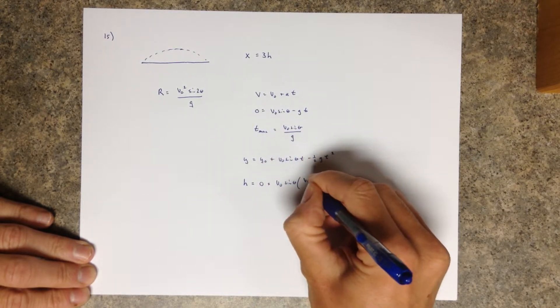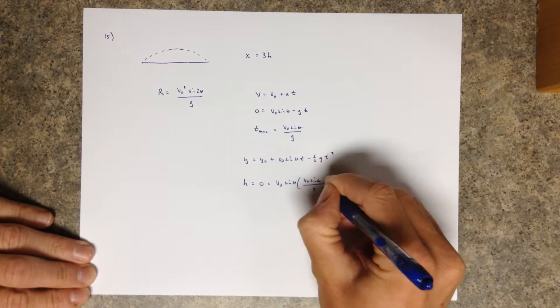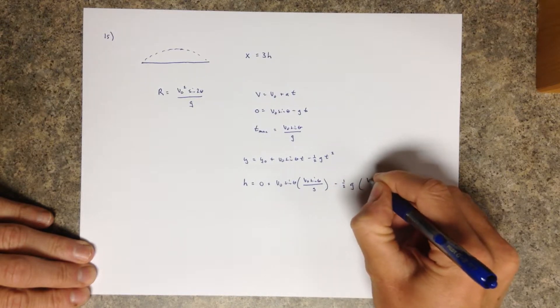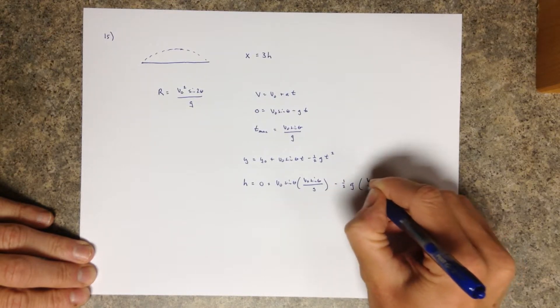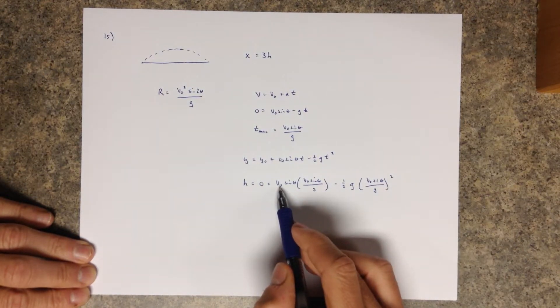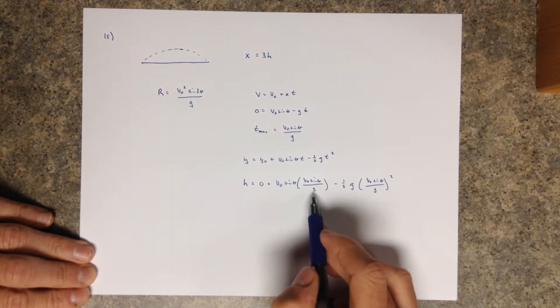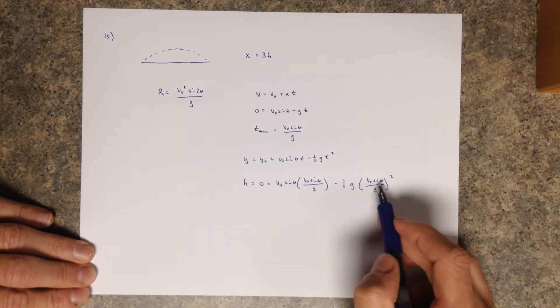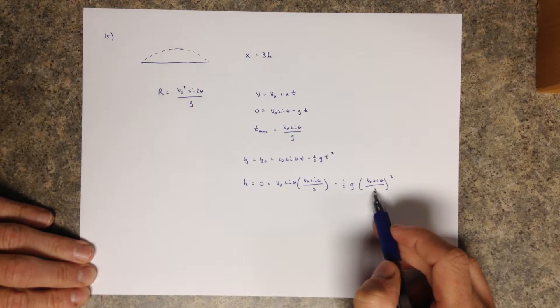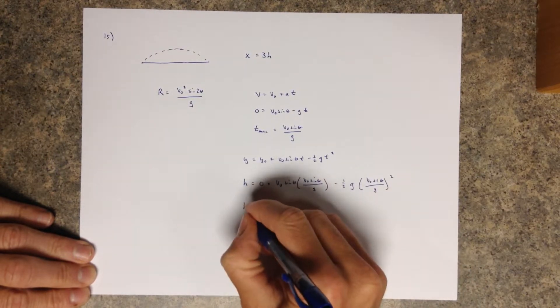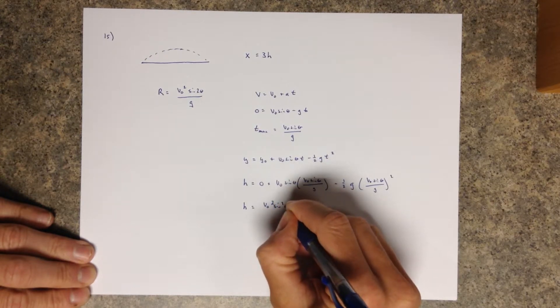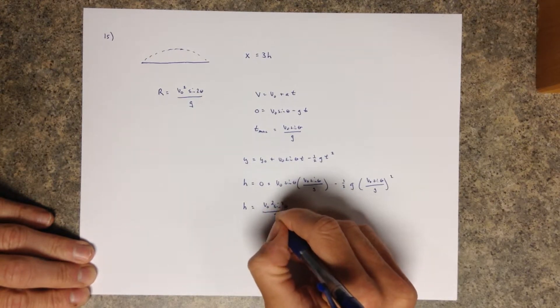Minus one-half gt. That's v naught sine theta over g squared. If you look at this term, this is a v naught squared sine theta squared over g, minus v naught squared sine theta squared. And this is a g, and g squared is going to become g. All of that really together makes h equal to v naught squared sine squared theta over 2g.